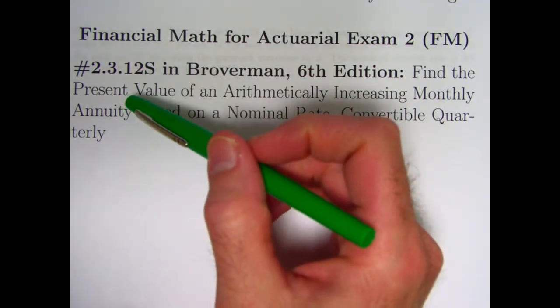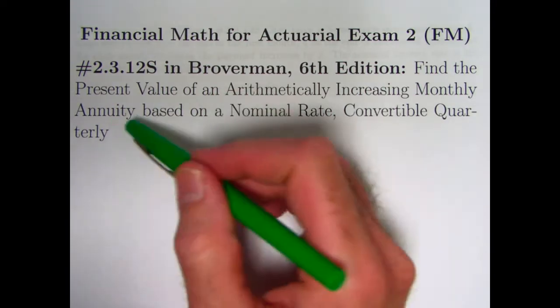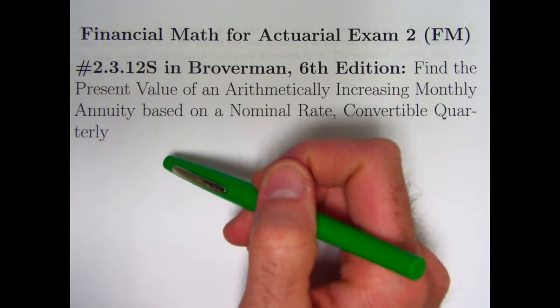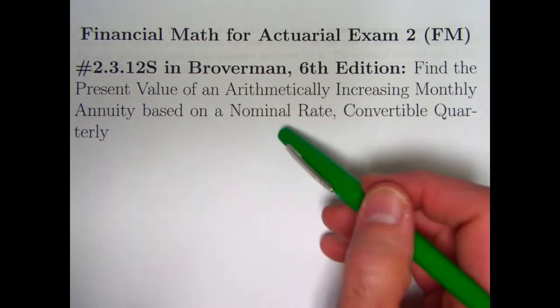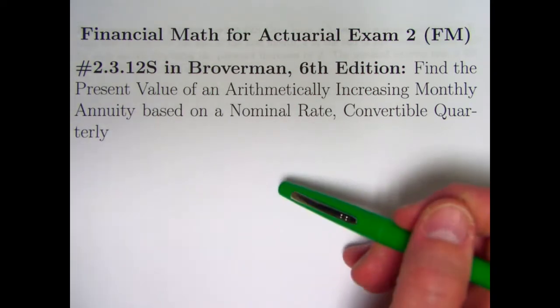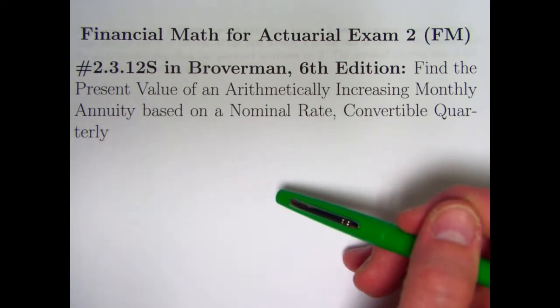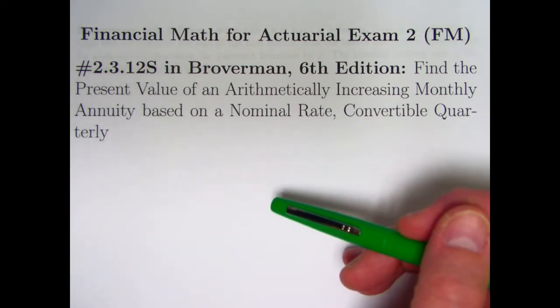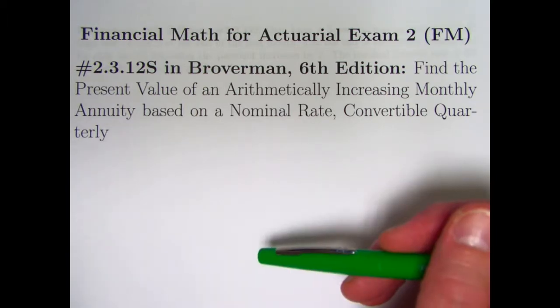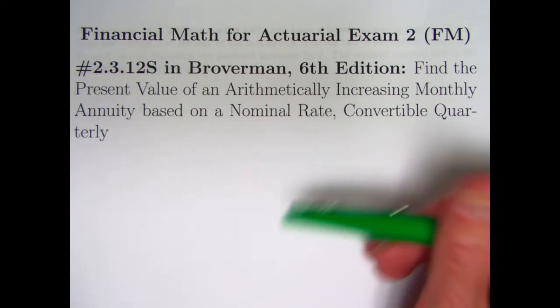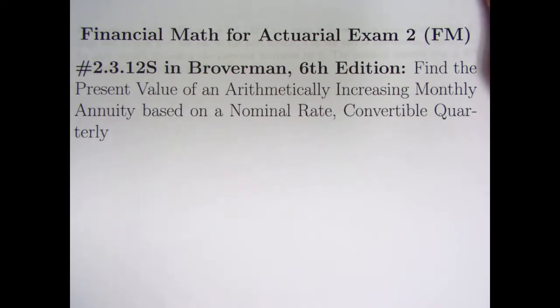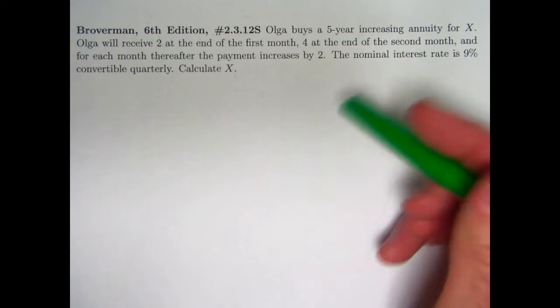In this video, we're going to solve problem 2.3.12S about finding the present value of an arithmetically increasing monthly annuity based on a nominal rate that's convertible quarterly. It's going to be a little easier problem than what we've done recently. I want to continue focusing on using formulas. In the last video, we had Danny and Sandy who were from Greece. In this video, we have the investor being Olga, who I guess is from Norway.